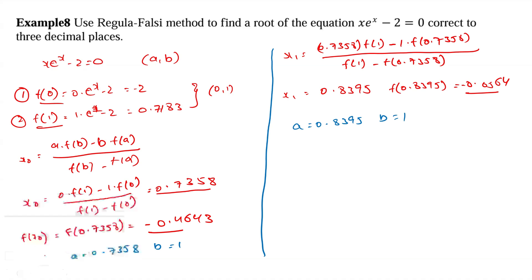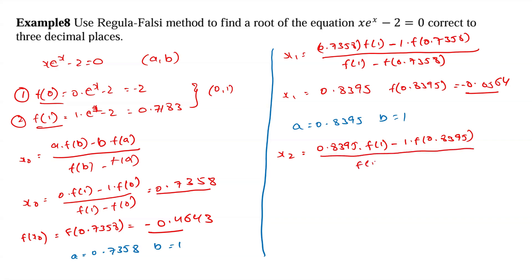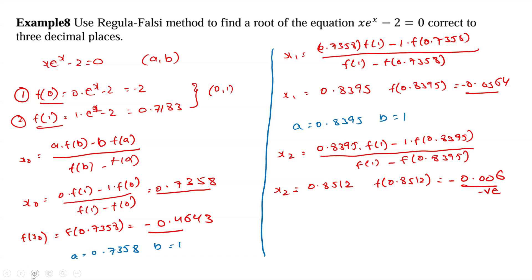Now we calculate x2 using the same formula with a = 0.8395 and b = 1. The result is x2 equal to approximately 0.8512, and f(0.8512) is equal to minus 0.006. Here also we get a negative value, so a is updated to 0.8512 and b remains 1.